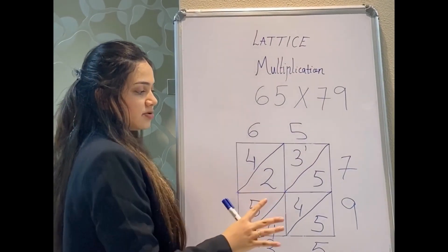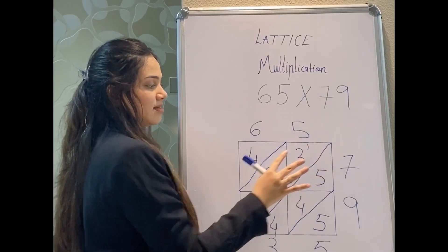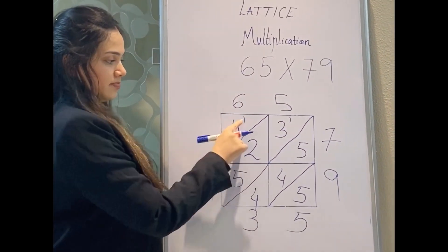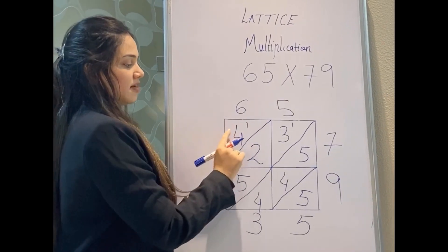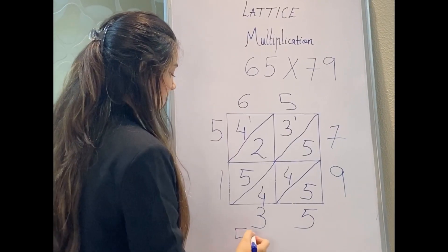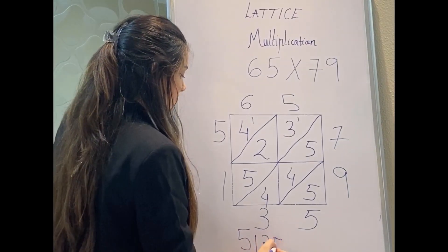Now in this part you'll add these numbers: 5 + 2 = 7. 7 + 3 = 10. 10 + 1 = 11. And 1 will be written here—1 and 1. Then 4 + 1 is 5. So my answer is 5135.